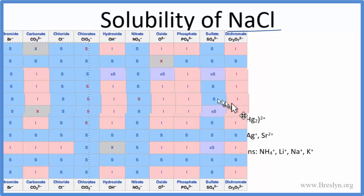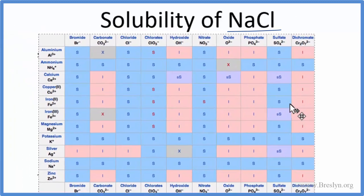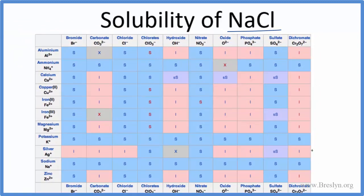We could also use a solubility table. And some teachers, they allow you to use this on an exam. So we look at the positive ions. We go down and we find sodium right here. And then chlorine, that's one of the negative ions. That's the chloride ion.